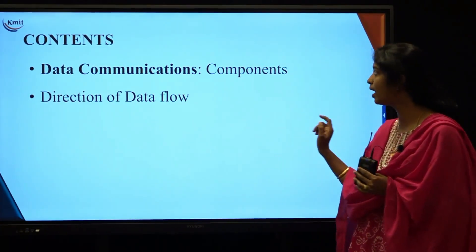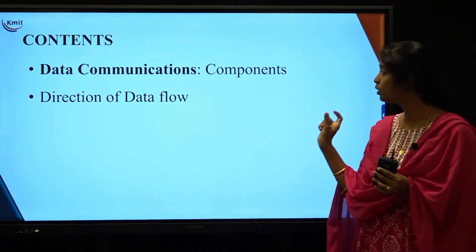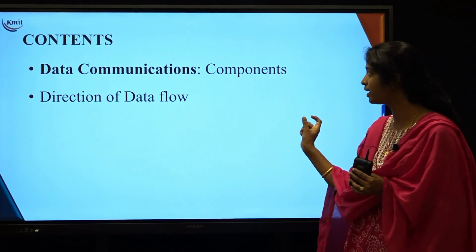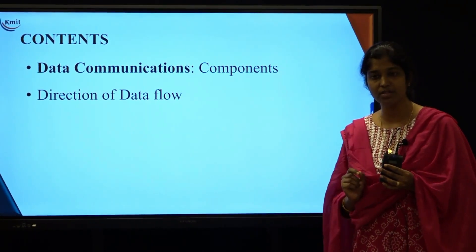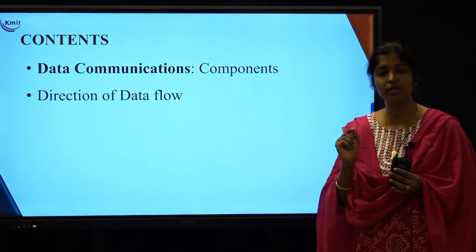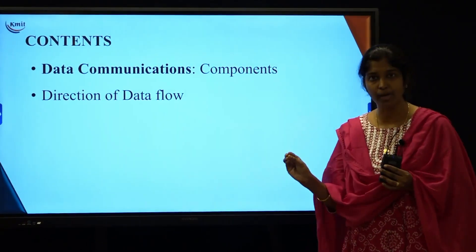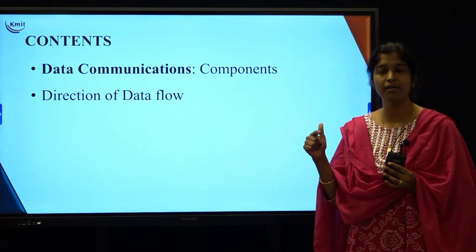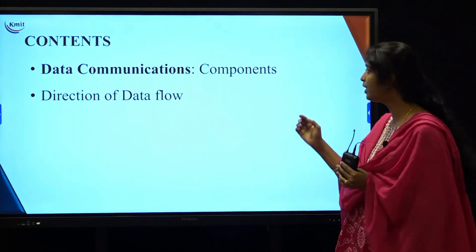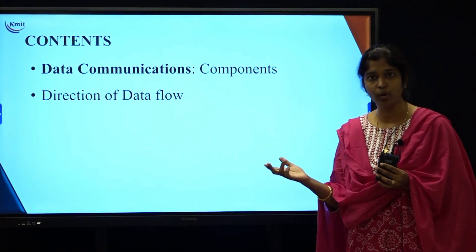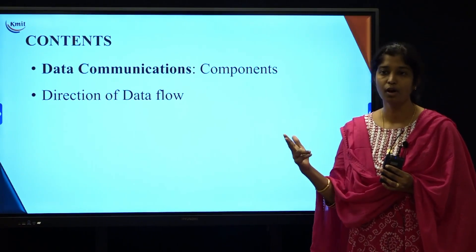This was about today's video on what is a data communication system, the components of a data communication system, and the direction of data flow. To summarize: data communication is the exchange of information between two devices using a communication link. There are five components — sender, receiver, message, transmission media, and protocol. And the direction of data flow has three types: simplex, half duplex, and full duplex. Thank you.